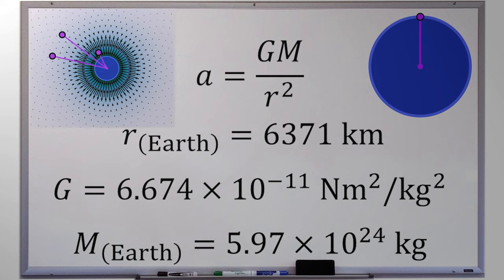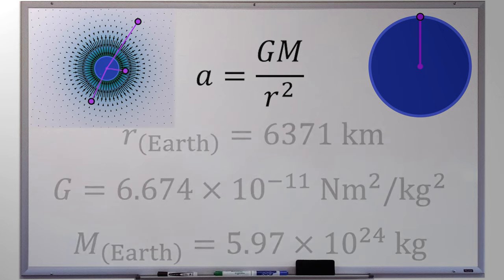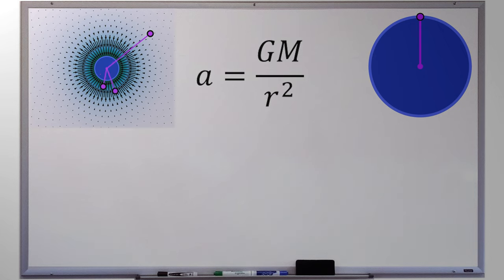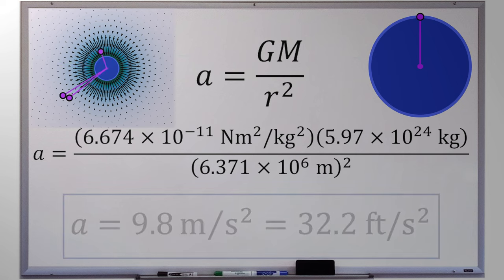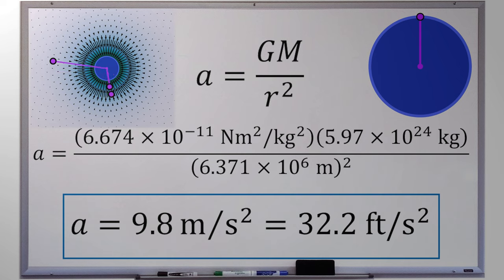If you go up a little bit above ground, or if you're on ground, it doesn't really make a difference as far as how far away you are from the center of the Earth. So let's plug in the gravitational constant, the mass of the Earth, and the radius of the Earth, and we can calculate what the acceleration is going to be near the surface of the Earth. When we crunch the numbers shown here on the screen, we end up with 9.8 meters per second squared, also known as 32.2 feet per second squared.